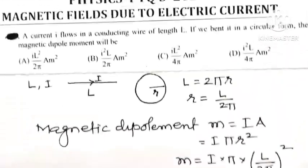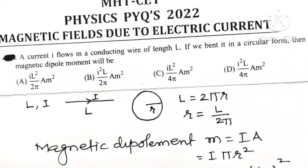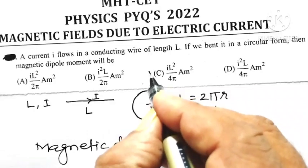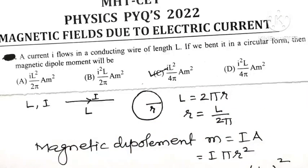So out of 4 options, which option is correct? IL² divided by 4π ampere meter square. So C is the correct option for this question.